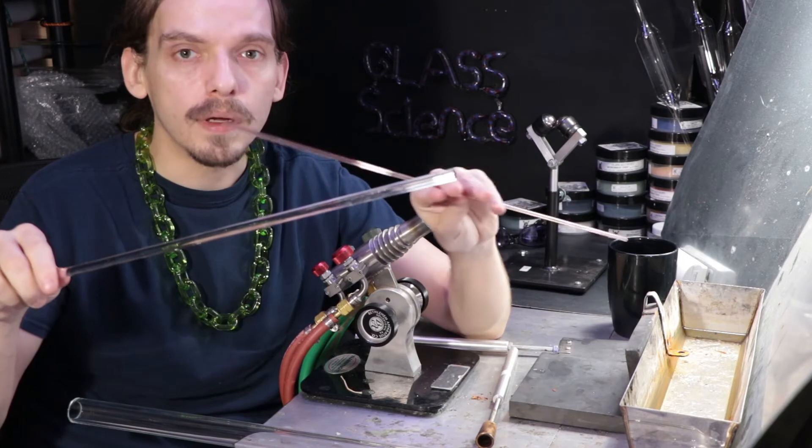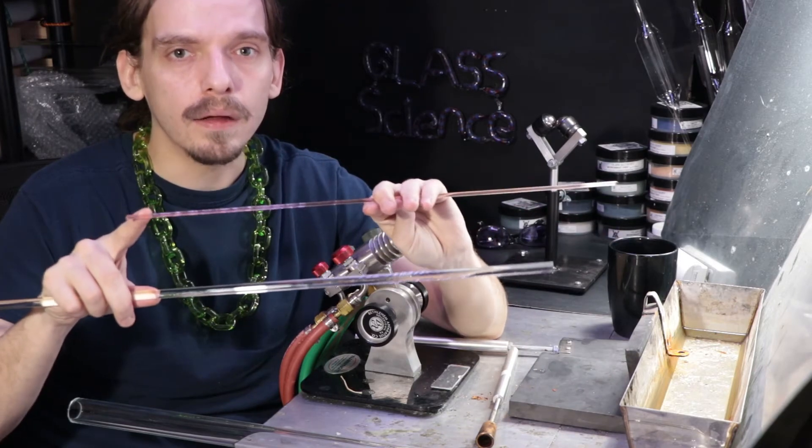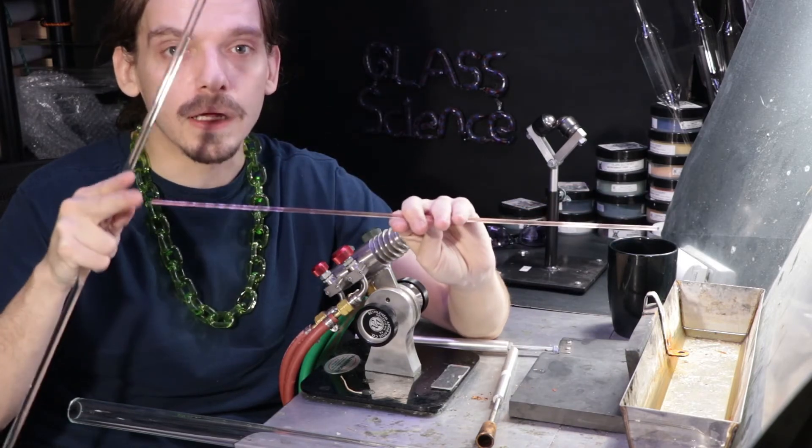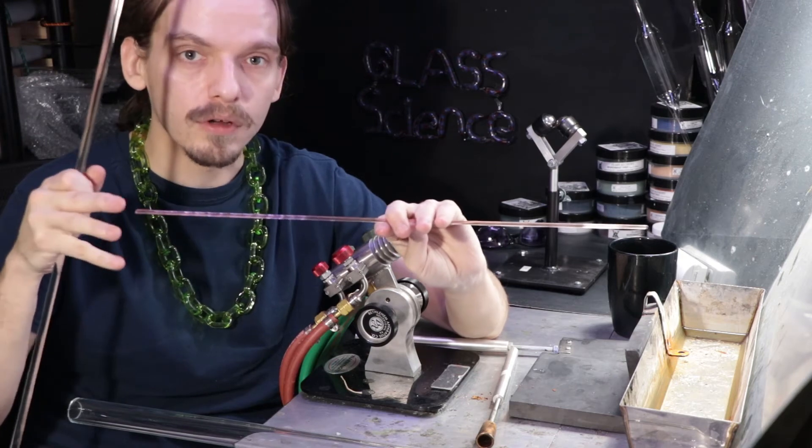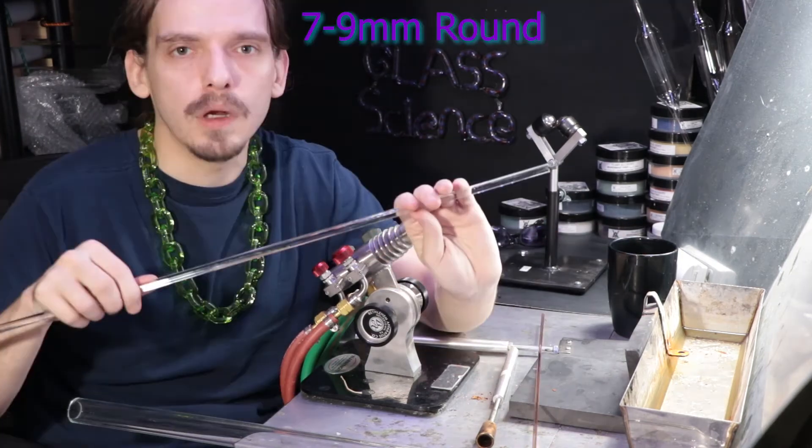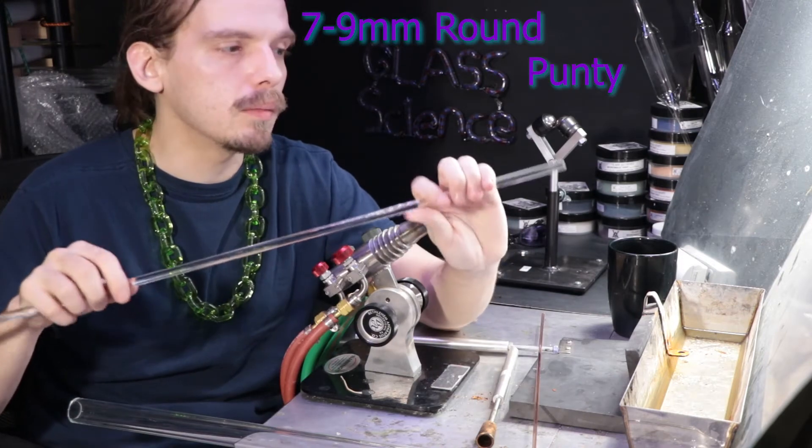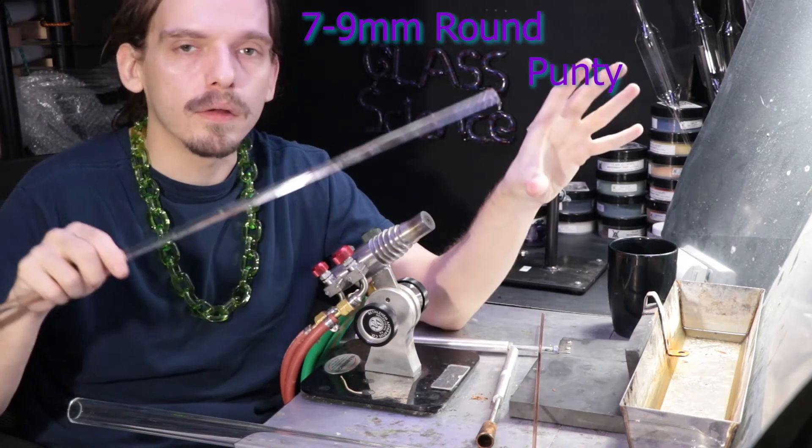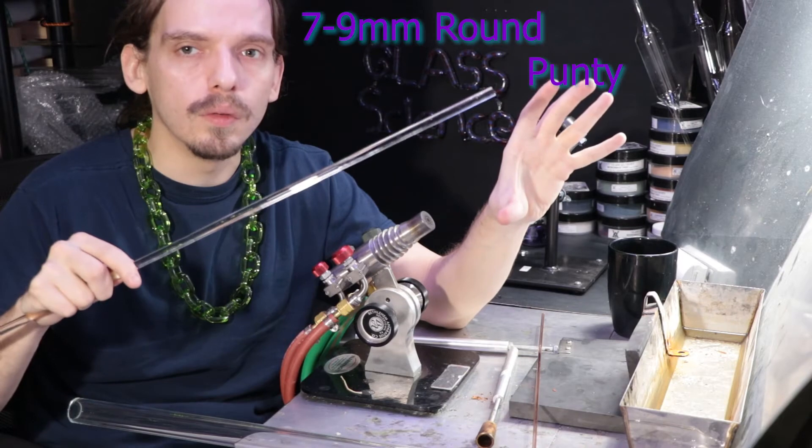Like this is a four millimeter and it'll break pretty easily. Even if it's securely connected to a marble, the marble could just be a little bit heavy and you whack it, it will fly off. Anywhere from a seven to a nine millimeter makes a pretty good punty and also allows you to do clear coast and such.